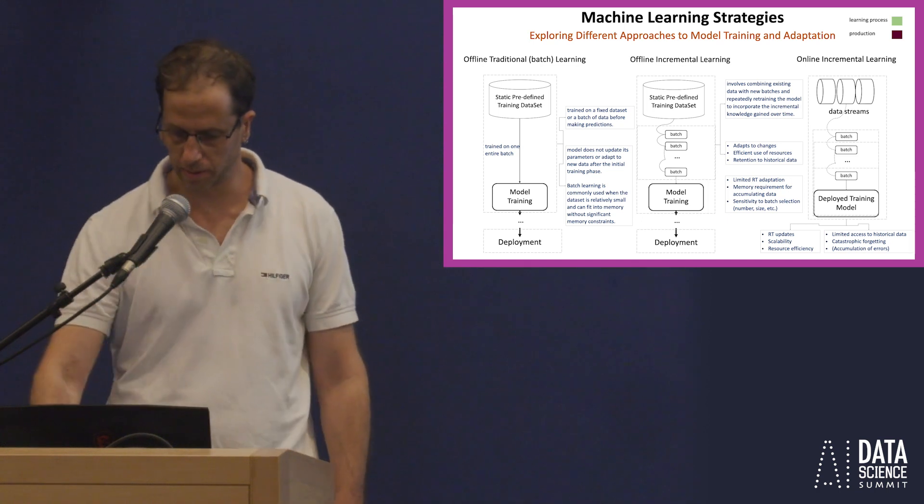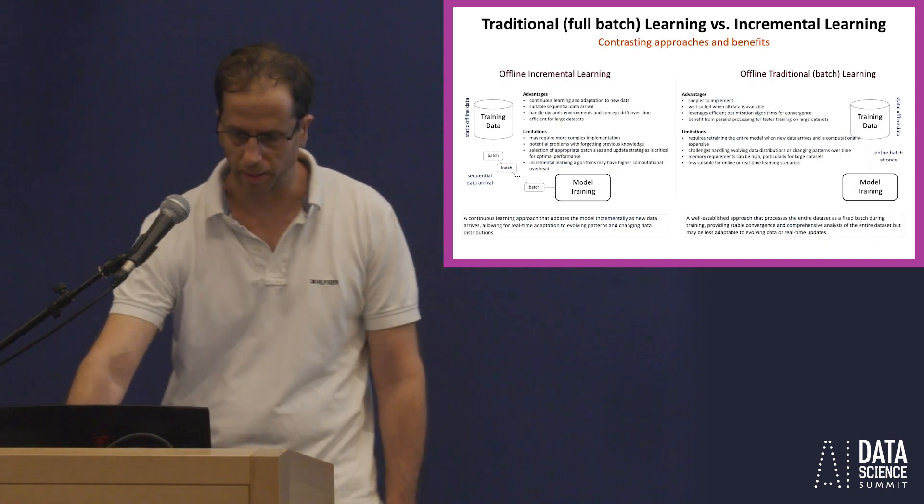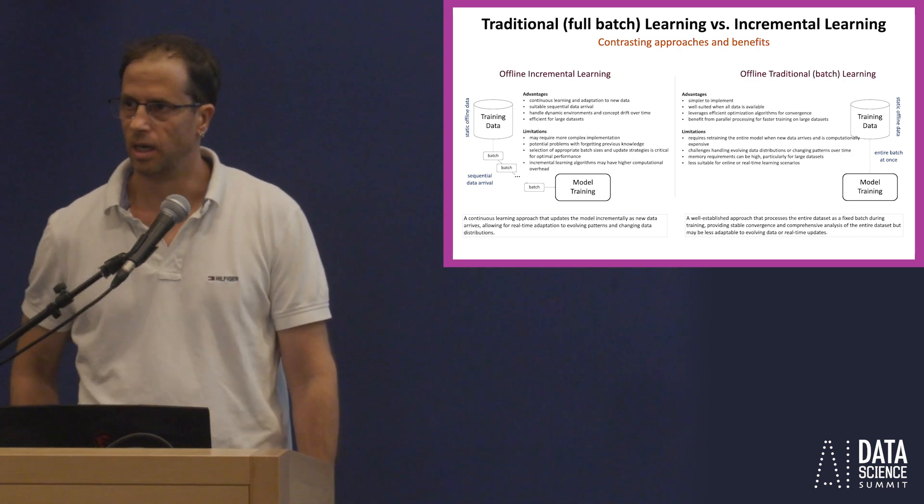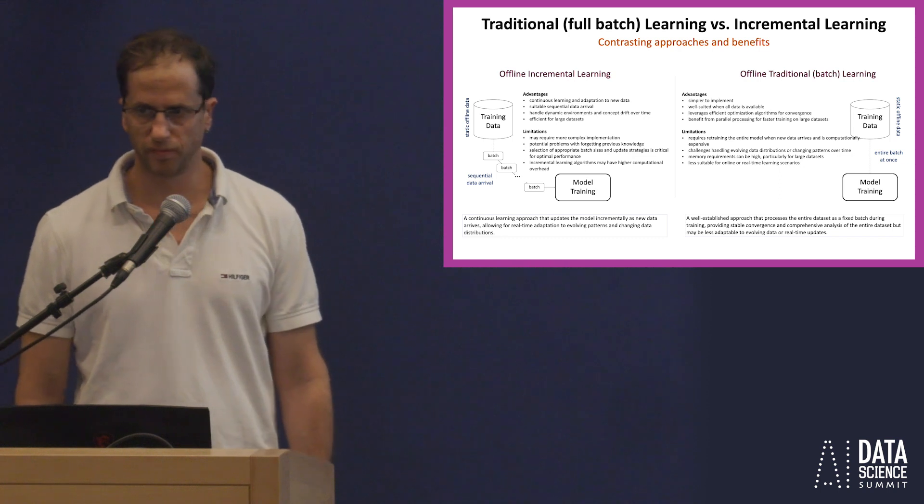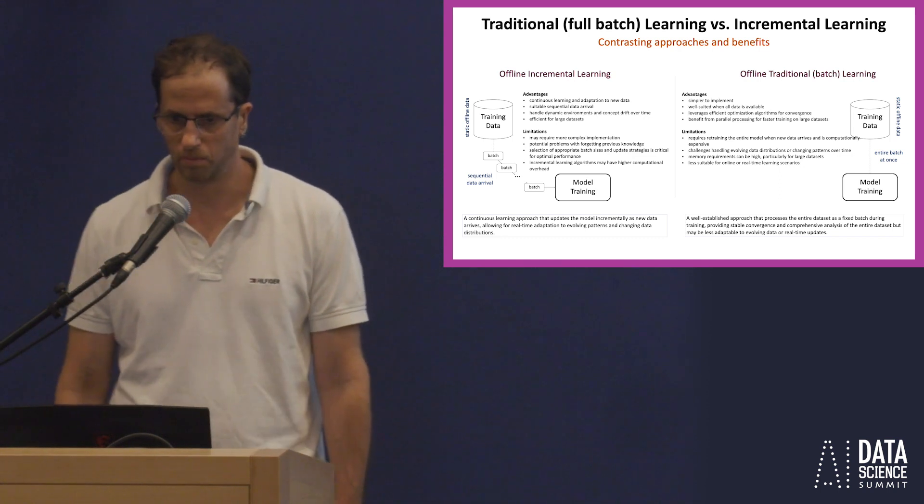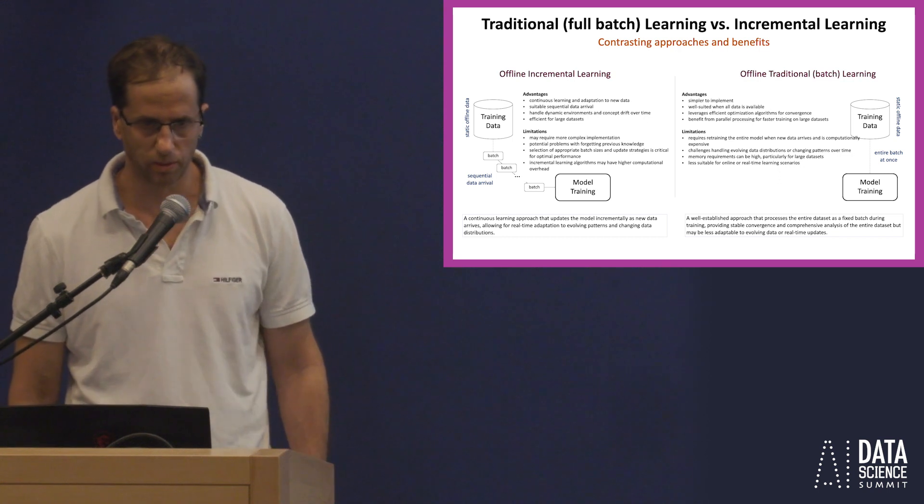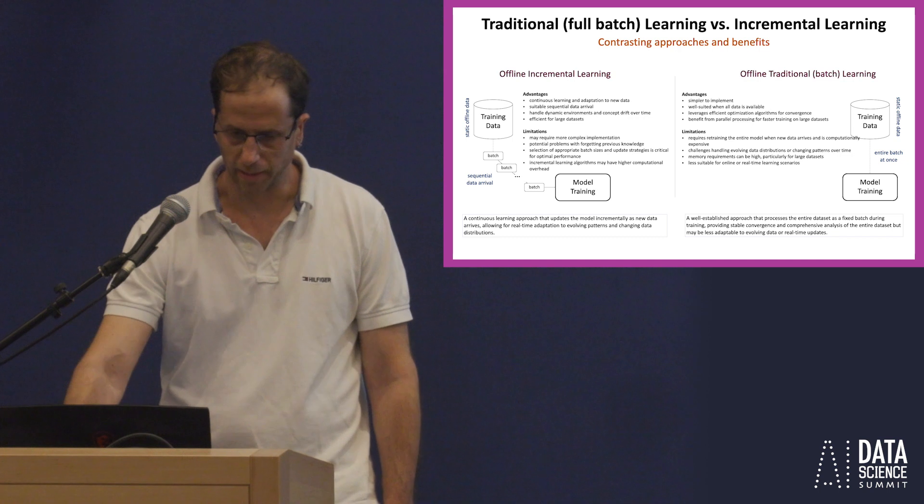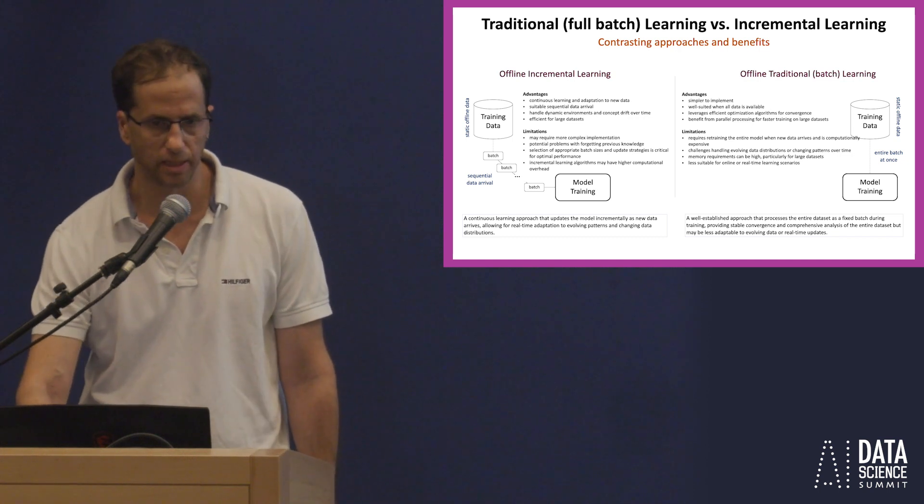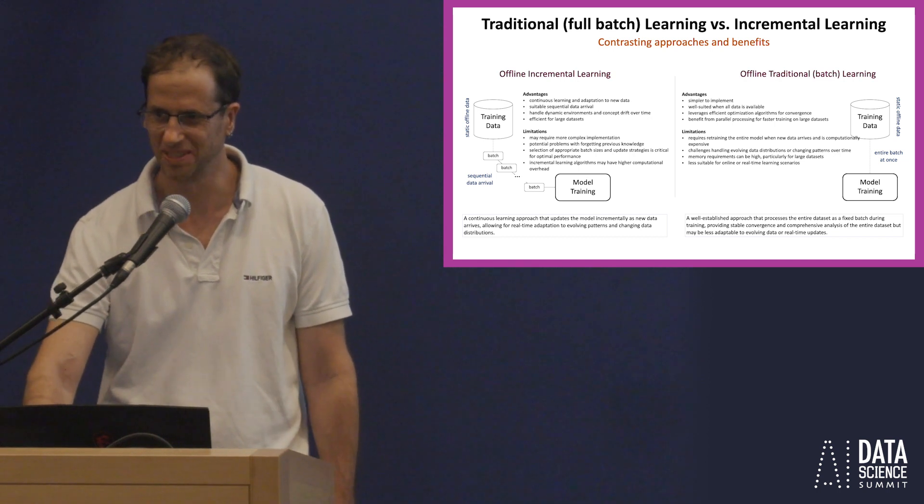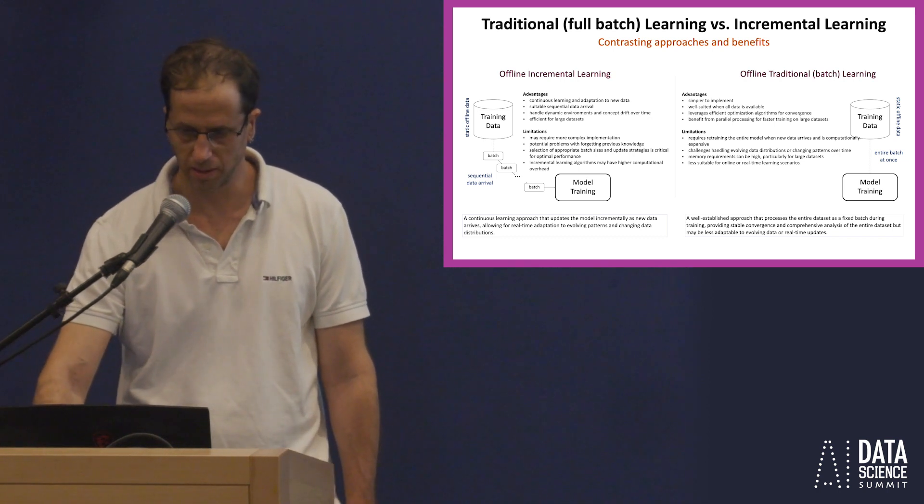So first of all, here we can see the traditional offline batch learning, the entire data set at once. It has its advantages, usually, if all data is available, if data fits your memory. This is the traditional, most of algorithms work like that. It's well established, published, and basically, I would dare say this is like almost 100% of industry. That this is what is done.